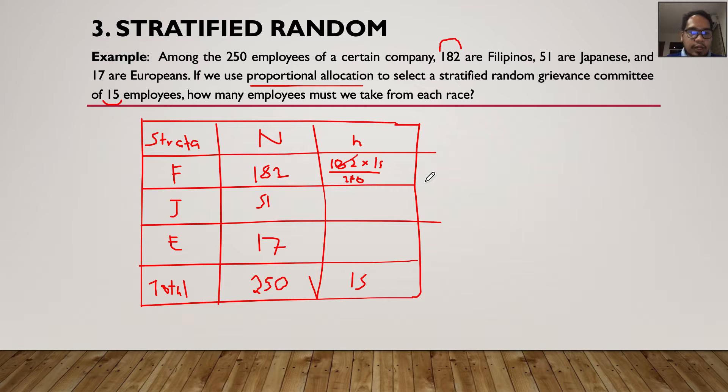So if we're going to make use of our calculator, climb the get one, if you have one there. So we have 182 times 15 divided by 250. What you'll have is 10.92. So since we don't have a 0.9 kind of person, that's only going to be a person without a head. So we're going to round it off to 11. So meaning out of the 15 personal grievance committee, 11 would be Filipinos. Meaning the other 4 would be foreigners.